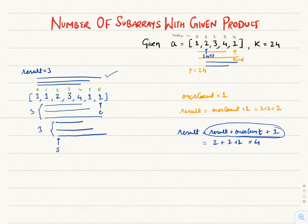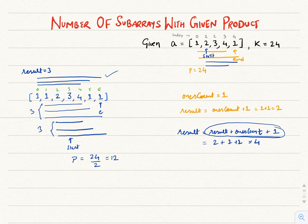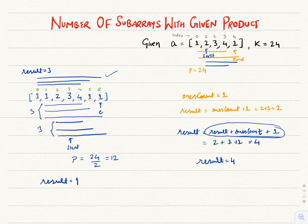At the end, we slide the window by moving the start pointer to the right. We first update the product by dividing it by the element at start pointer: 24 ÷ 2 = 12, then increment start, so start now points to element 3. Since we cannot move the end pointer further, we stop this loop and find our result. Result holds 9 in the extended example and 4 in the given example. Next we'll look at the code and dry run it on the given example.